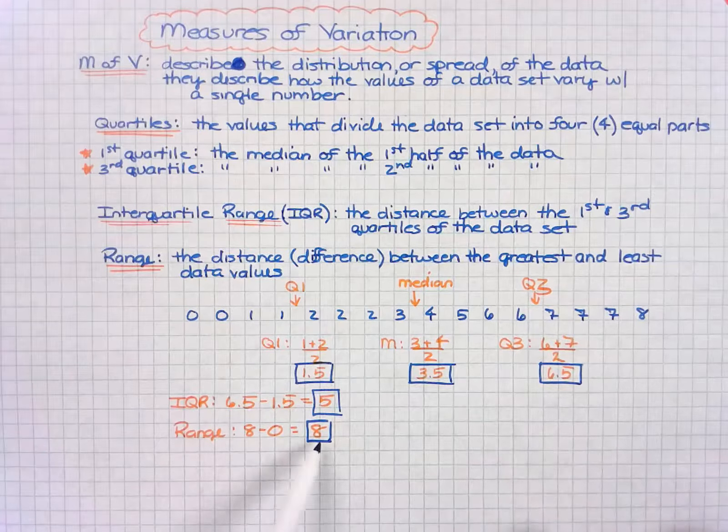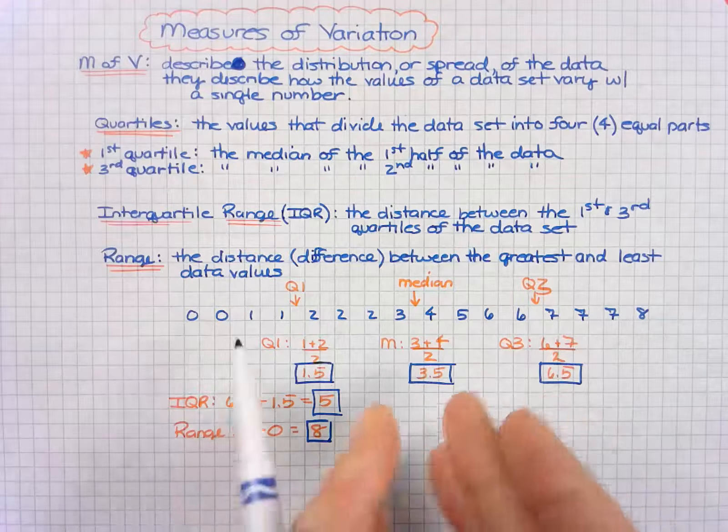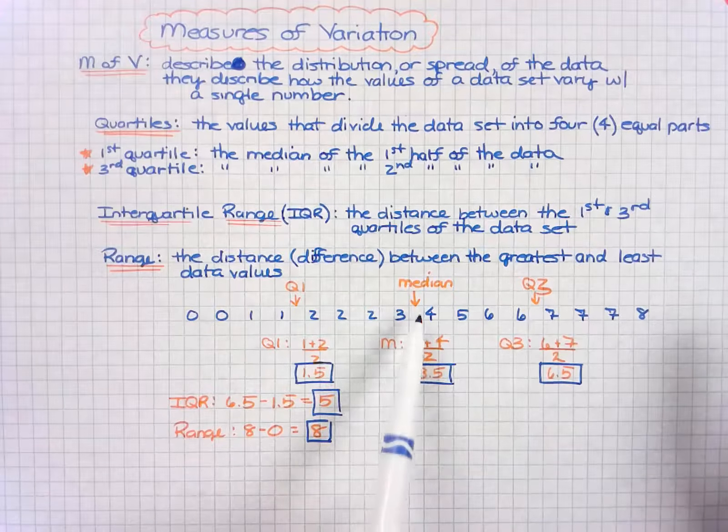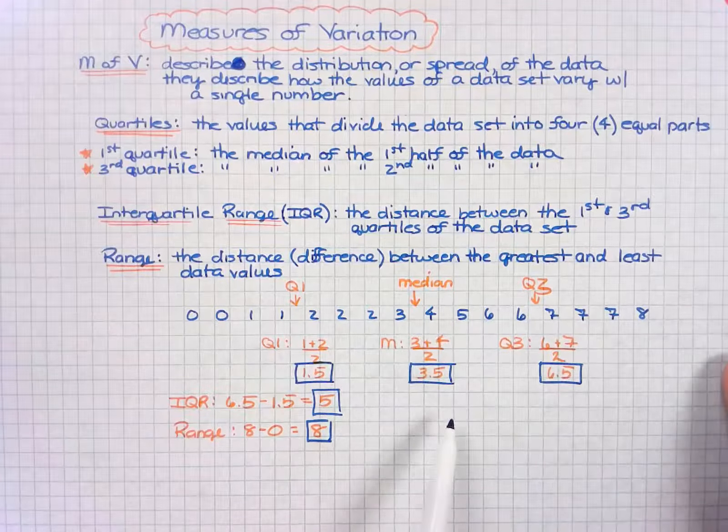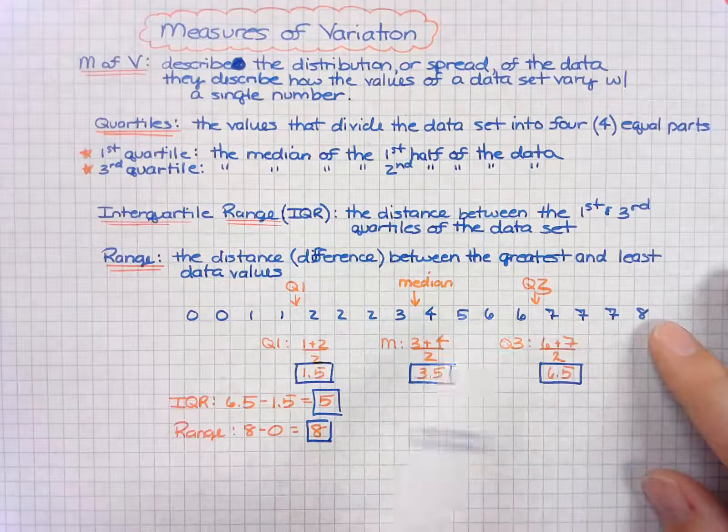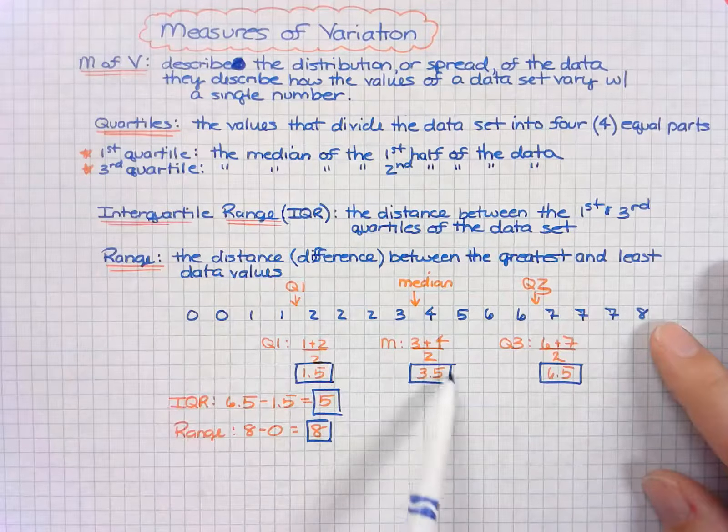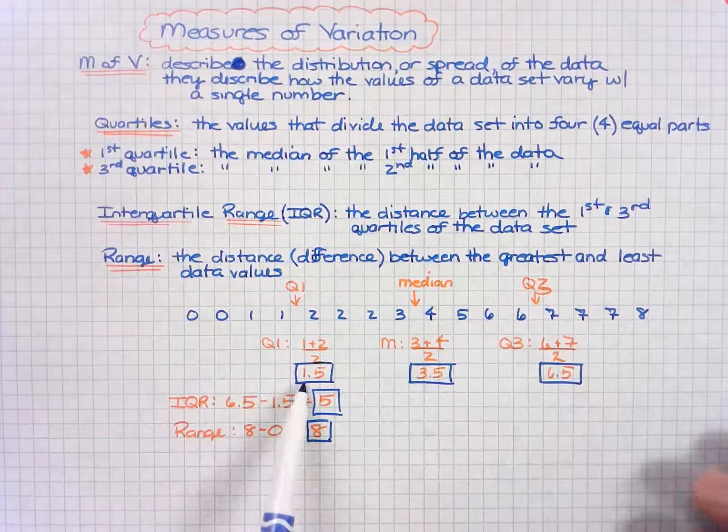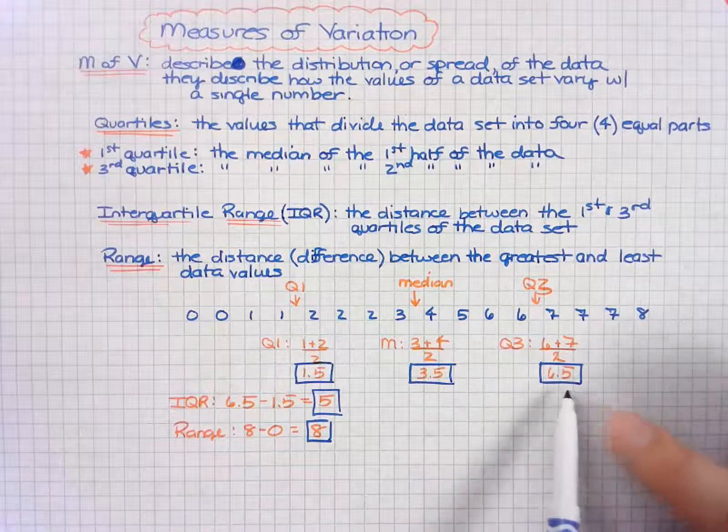So the question is, how does this data spread? How far away does this spread from the mean or the measure of center or the median? We have all the way from 8 to 0. The median is 3.5. The first half of the data is somewhere close to 1.5, the second half of the data's average is close to 6.5.